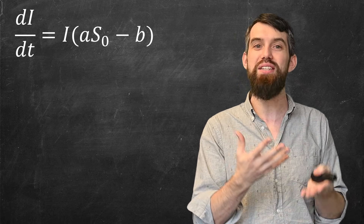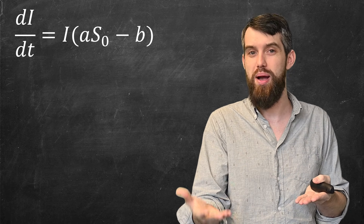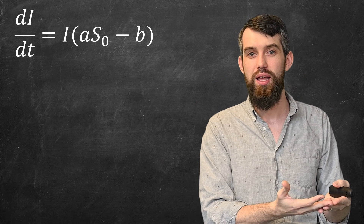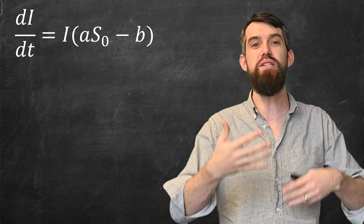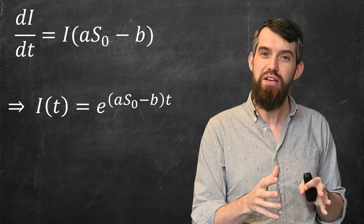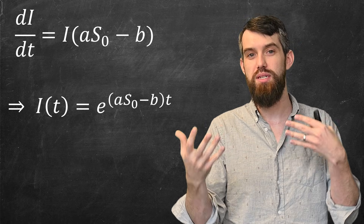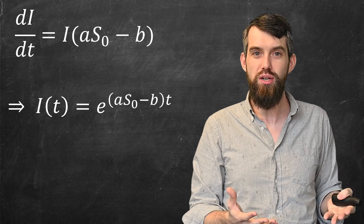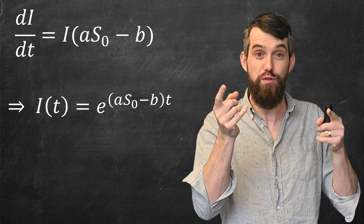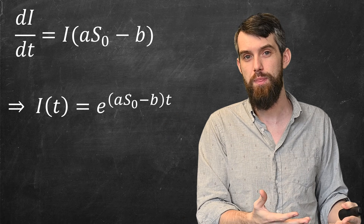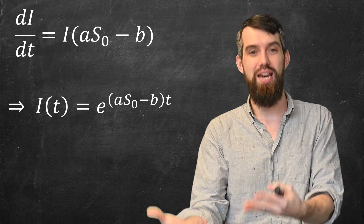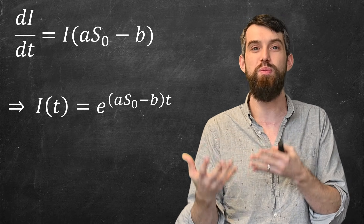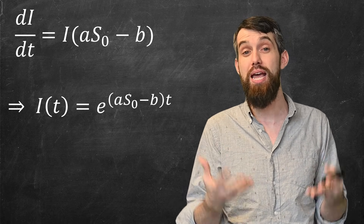Under that approximation, dI/dt equals I times the constant (a·S₀ − b). This is a differential equation that relates the derivative of I to I itself. A candidate solution is I(t) = e^((a·S₀ − b)·t). Indeed, if you take the derivative of that, the constant comes out in front and you recover the equation — it checks out as a solution to that ODE. So what we're saying is that near the beginning, when S₀ is approximately constant, you get exponential growth.